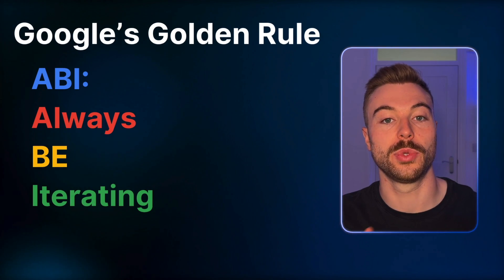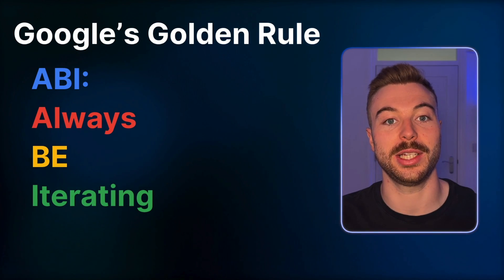Prompting is a process. It's not going to be one-hit wonders that completely achieve the result every single time. But Google does have a golden rule: ABI - always be iterating. And this takes us on to the next part, which is where we're going to help improve those outputs over time.